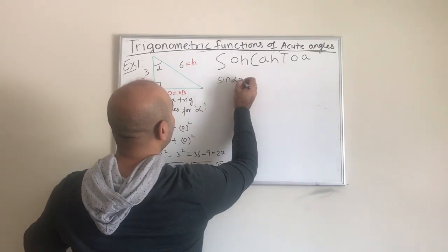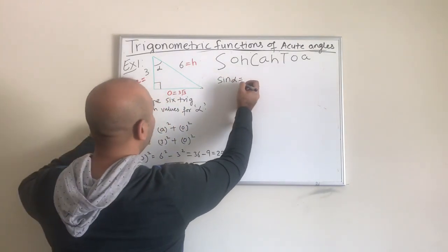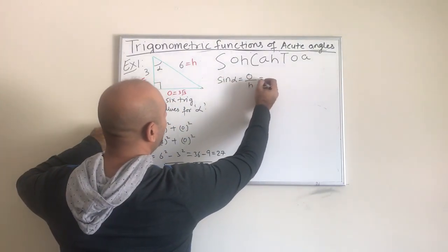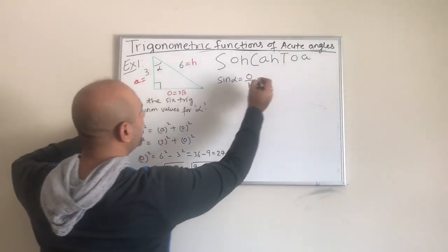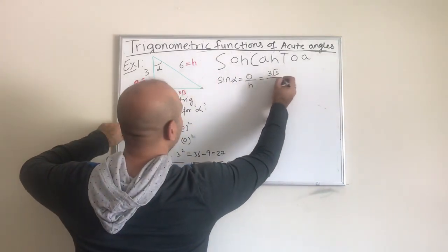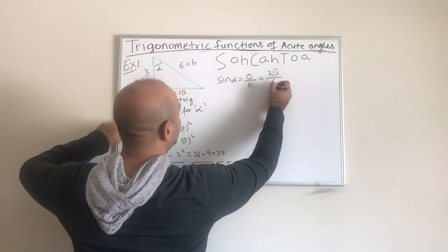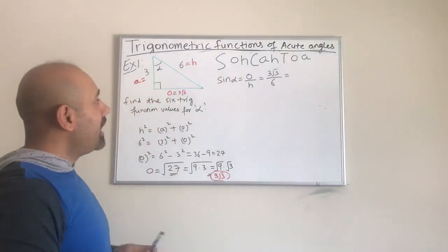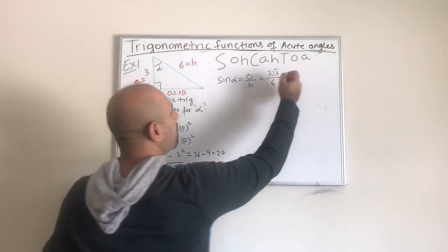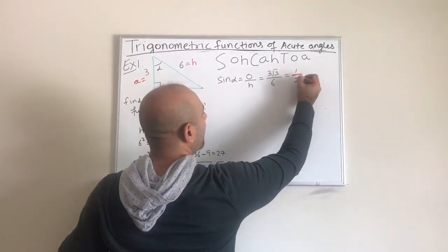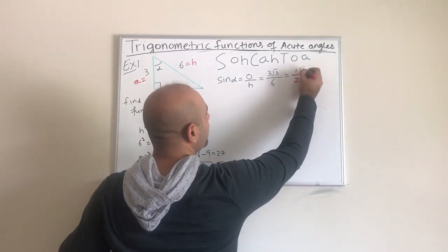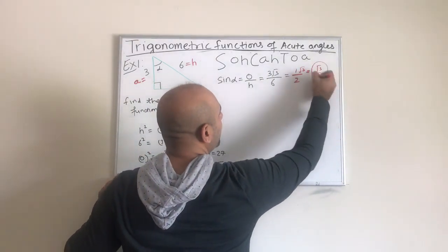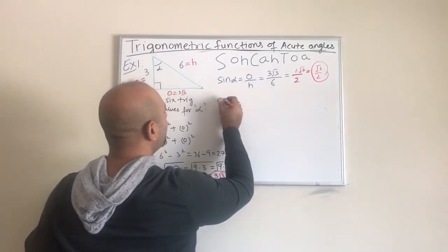First I will start with the sine of alpha. Sine of alpha is opposite over hypotenuse. My opposite is 3 radical 3, divided by the hypotenuse 6. We simplify: 3 and 6 give us one half, so it becomes radical 3 over 2. That is my sine of alpha.